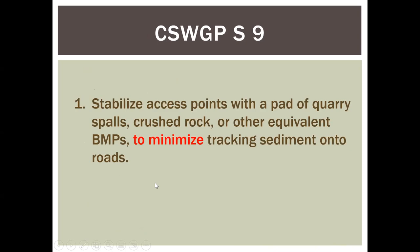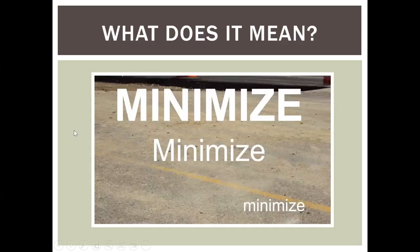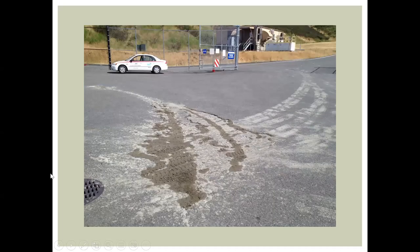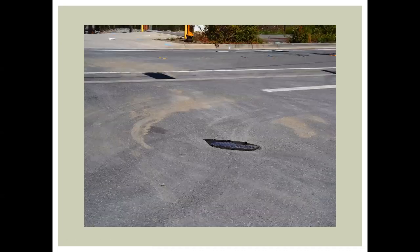For example, from the permit: 'stabilize access points with a pad of quarry spalls, crushed rock, or other equivalent BMPs' — that's good information to minimize tracking sediment on roads. But quarry spalls and crushed rock don't really do much for sediment track-out. Then there's the word 'minimize.' What does it mean? One person's minimize is different than another's. Does it mean no track-out? No clumps? Different situations raise the question: what is your expectation, and what is the regulator's expectation?